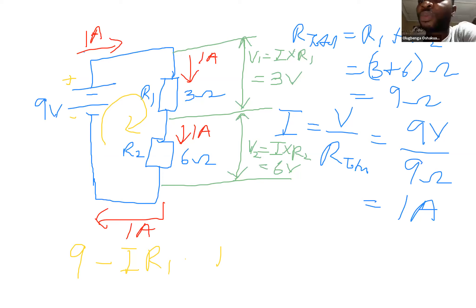Then the voltage drop, that is minus IR2, that is minus 6. Sorry, I is 1 ampere right there. I is 1 ampere. R1 is 3 ohms. The product gives us 3 volts. I is 1 ampere. R2 is 6 ohms. The product gives us 6 volts, and continues to say equal to 0.